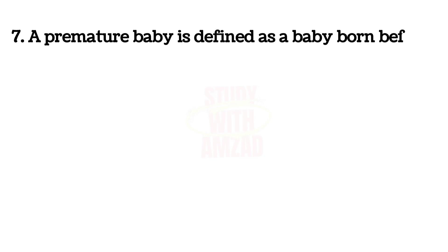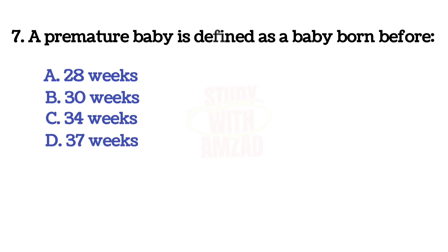Next question: a premature baby is defined as a baby born before? The correct answer is D, 37 weeks.